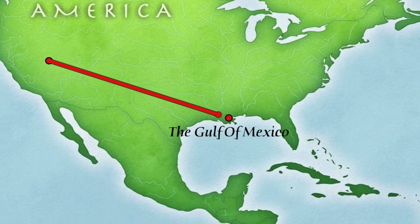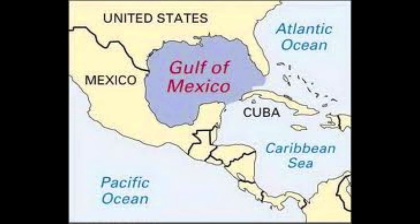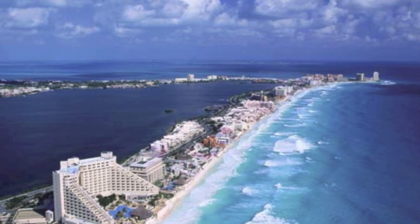The Gulf of Mexico is a body of water that is located between the eastern coast of Mexico and the western coast of Florida. It has warmer water than the Atlantic Ocean.